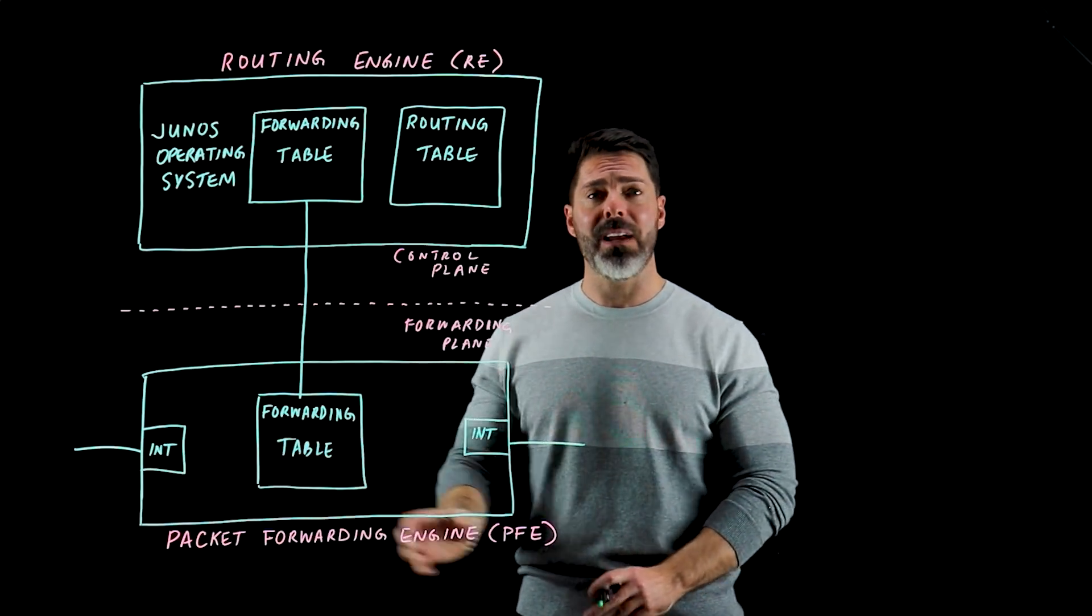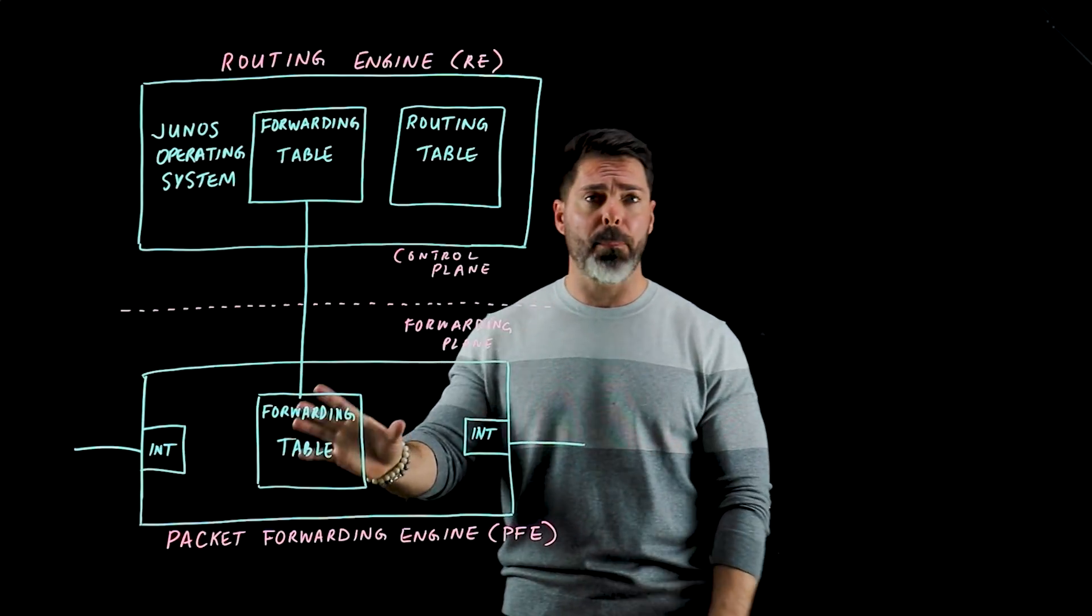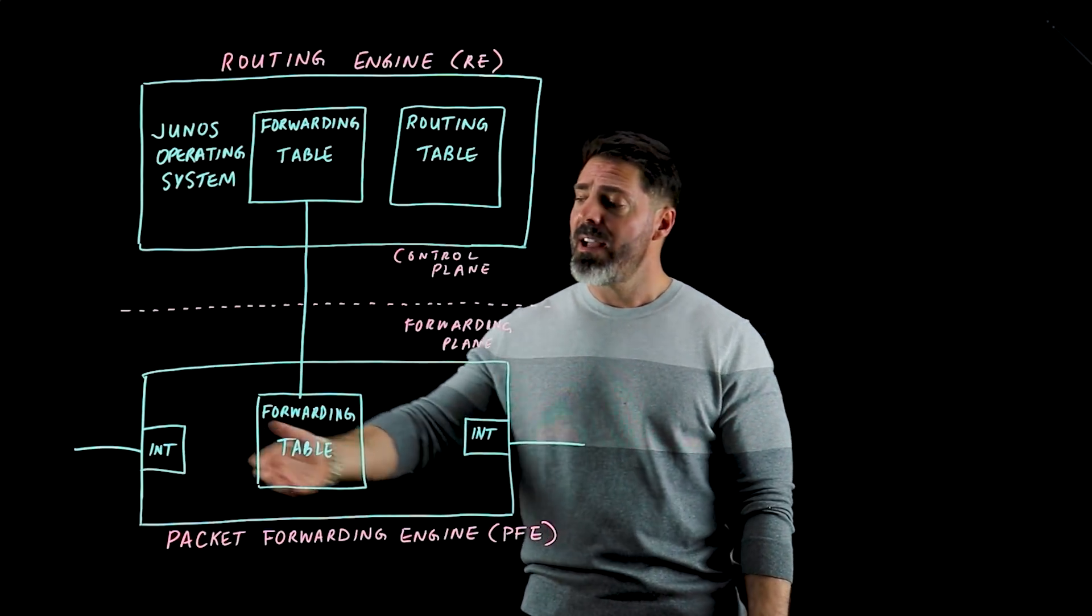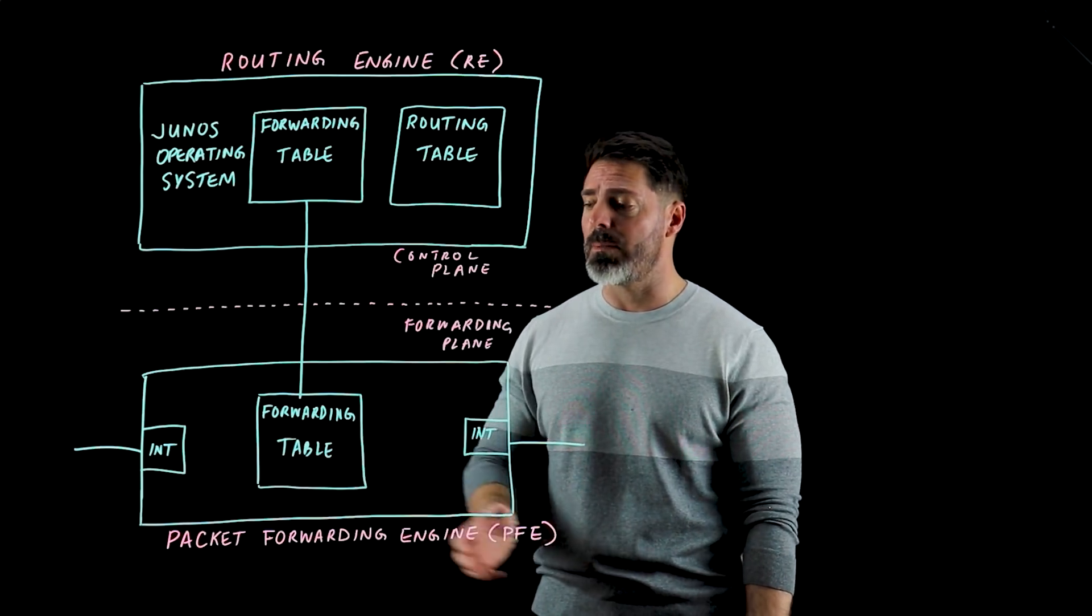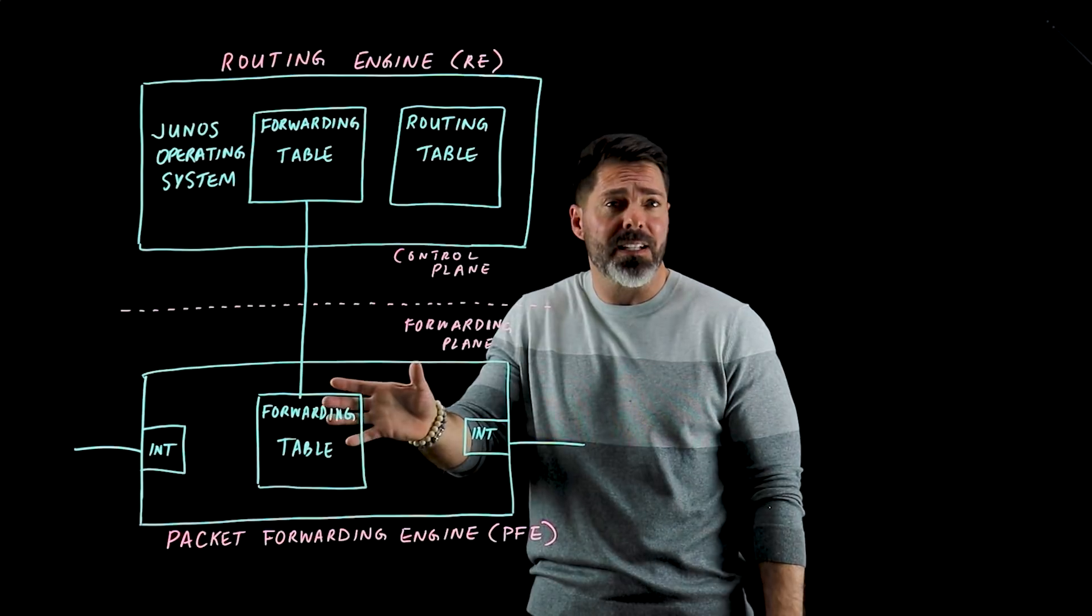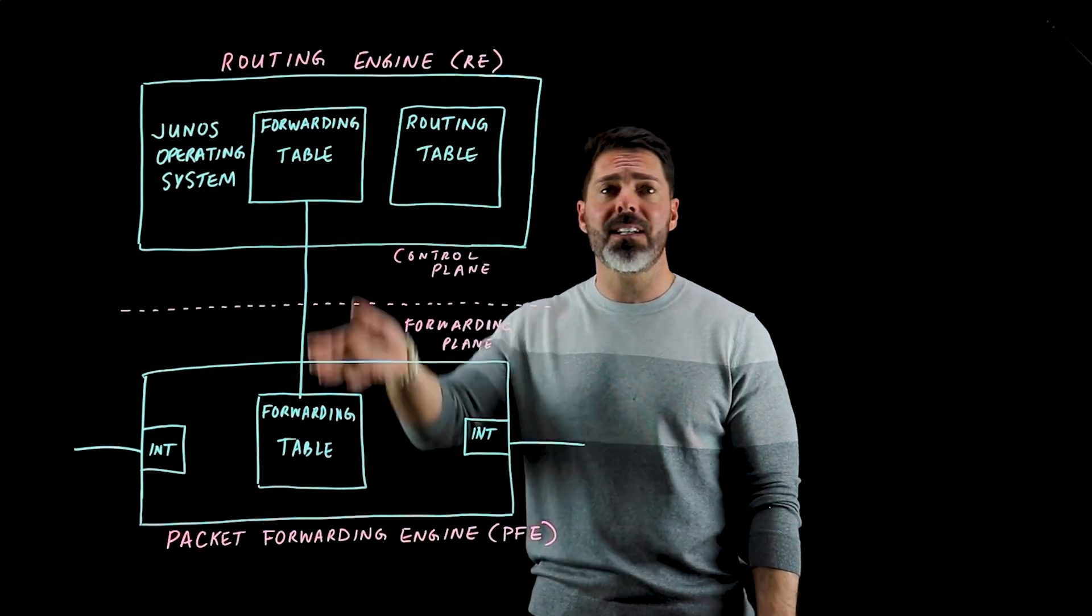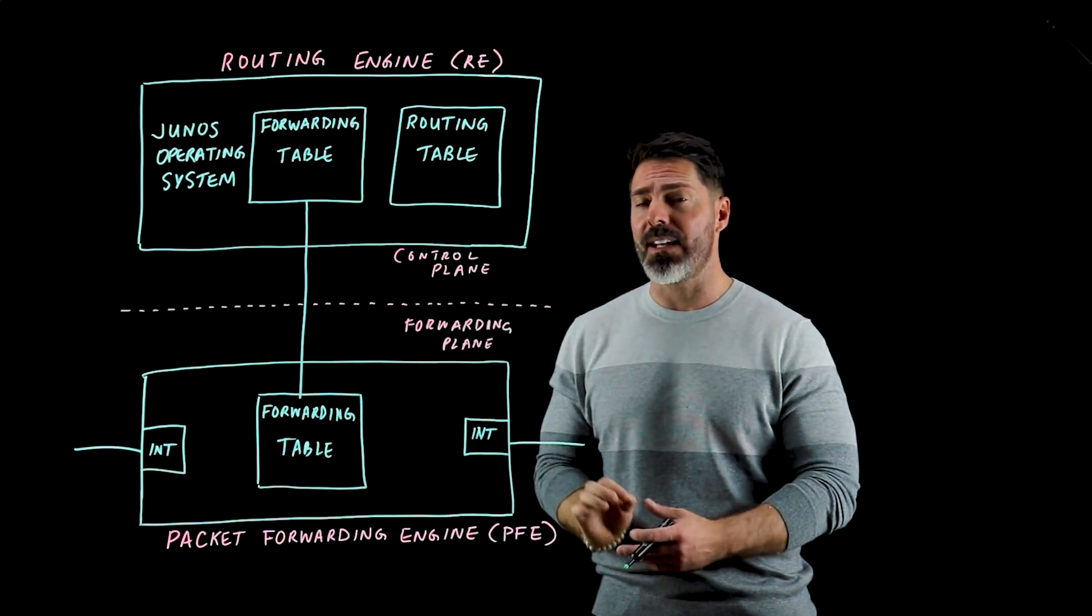Down on the PFE we have a local copy of the forwarding table. The reason we want to push a local copy down here is so that when packets come in and we want to send those packets through the system, we can make a local forwarding table lookup and make a decision locally without having to send that traffic up to the routing engine to consult where the best path to that destination is.